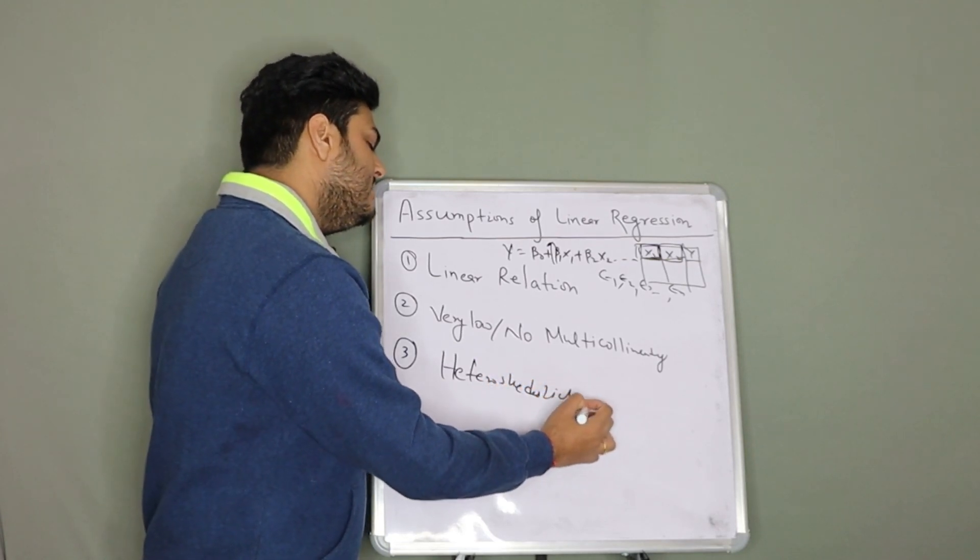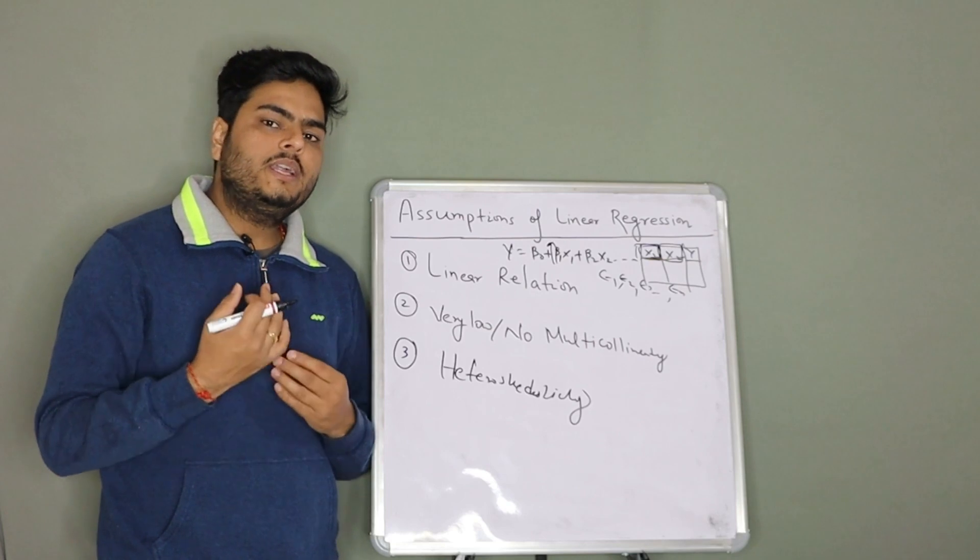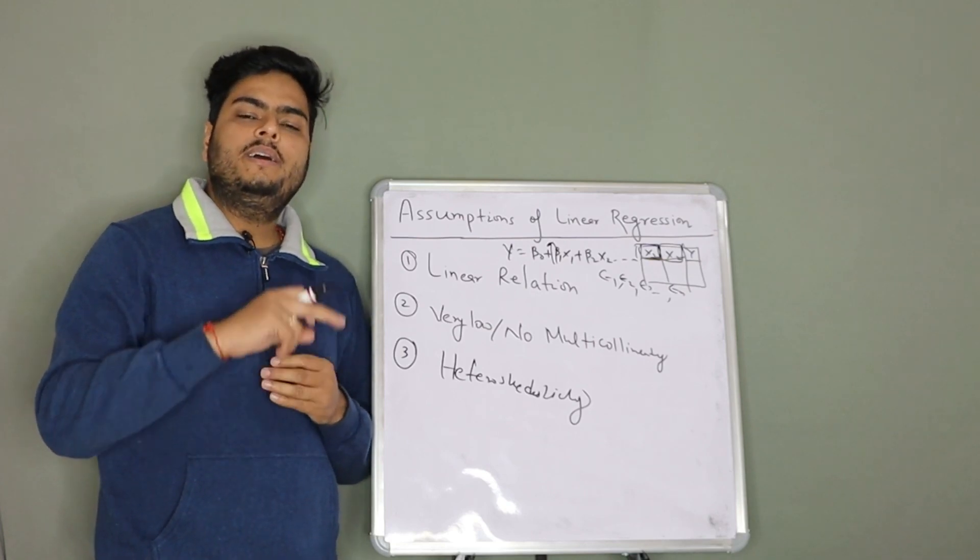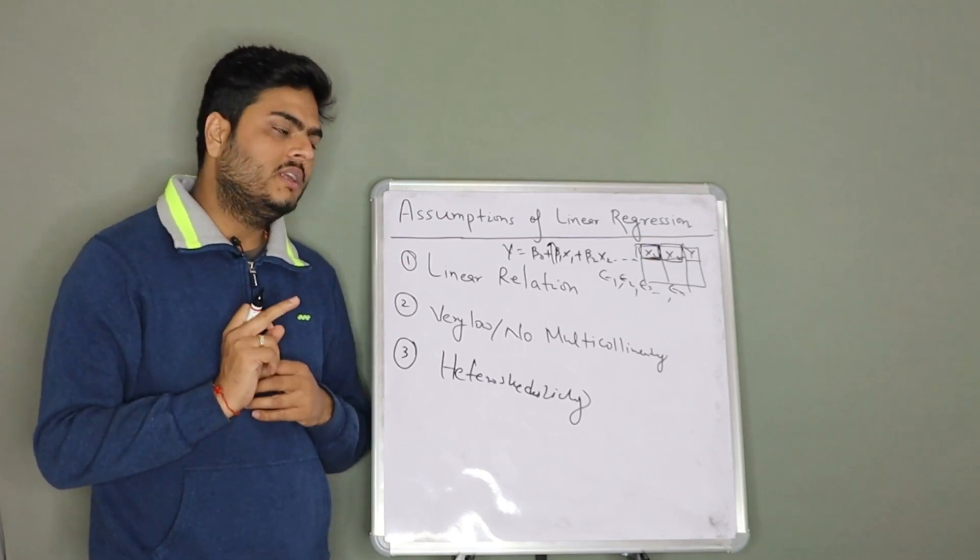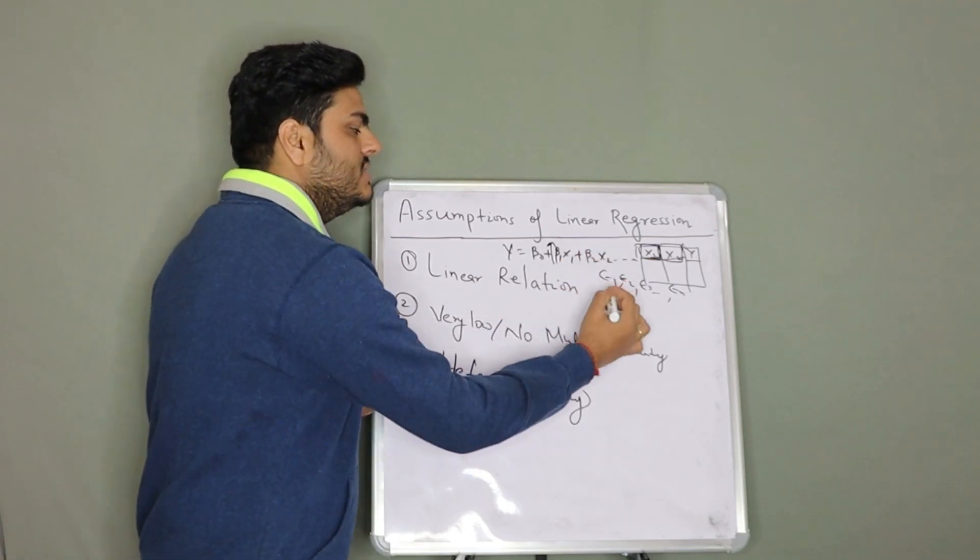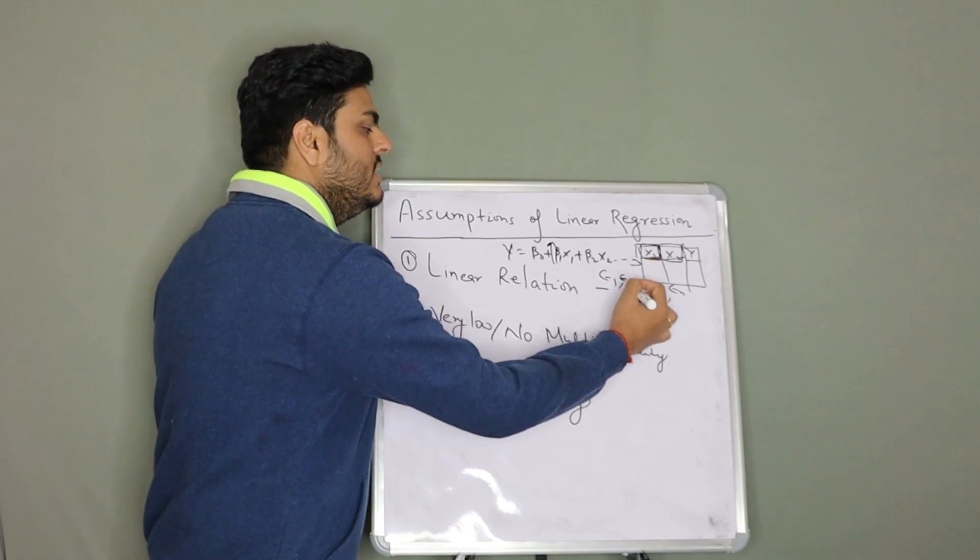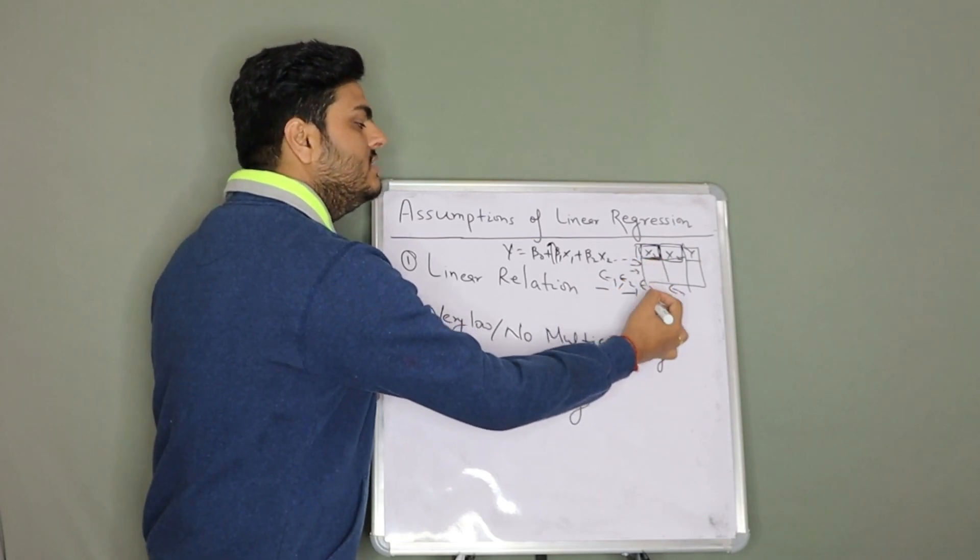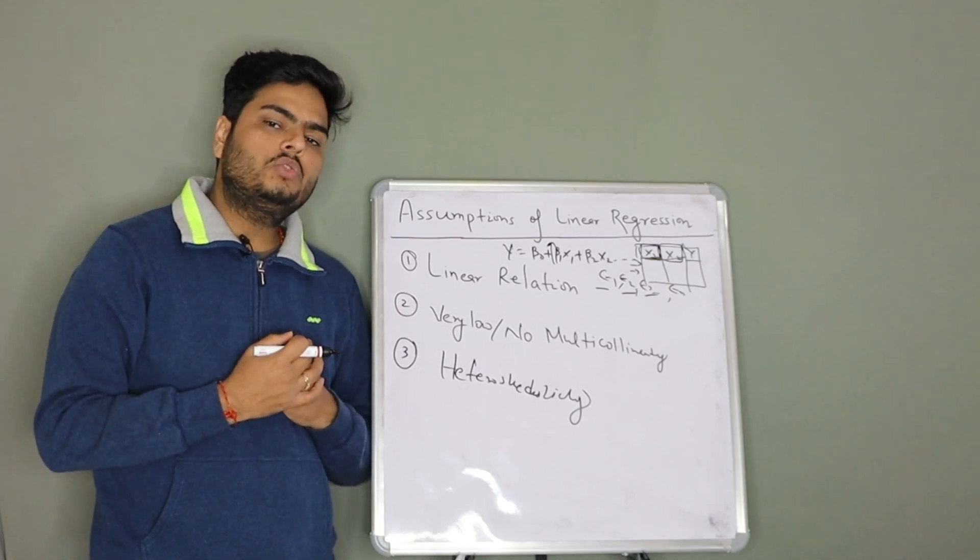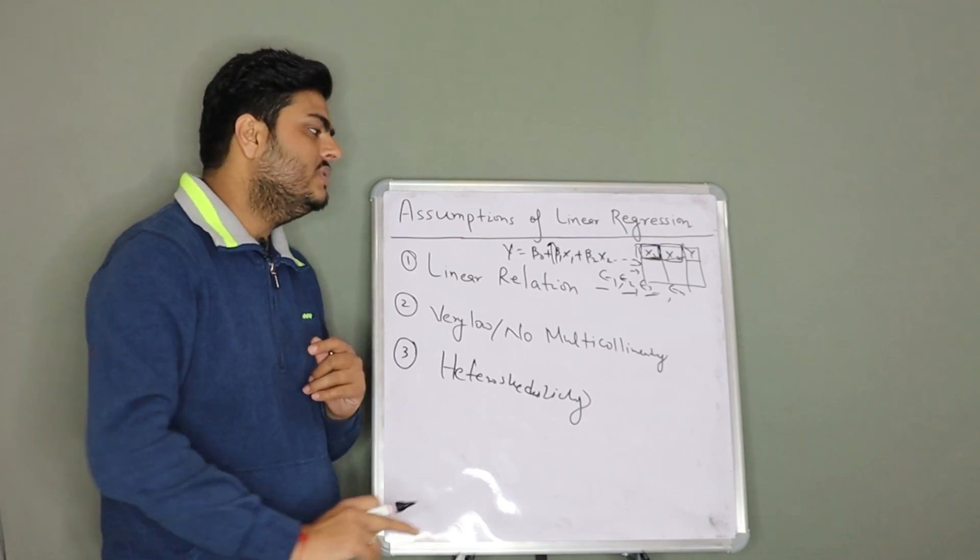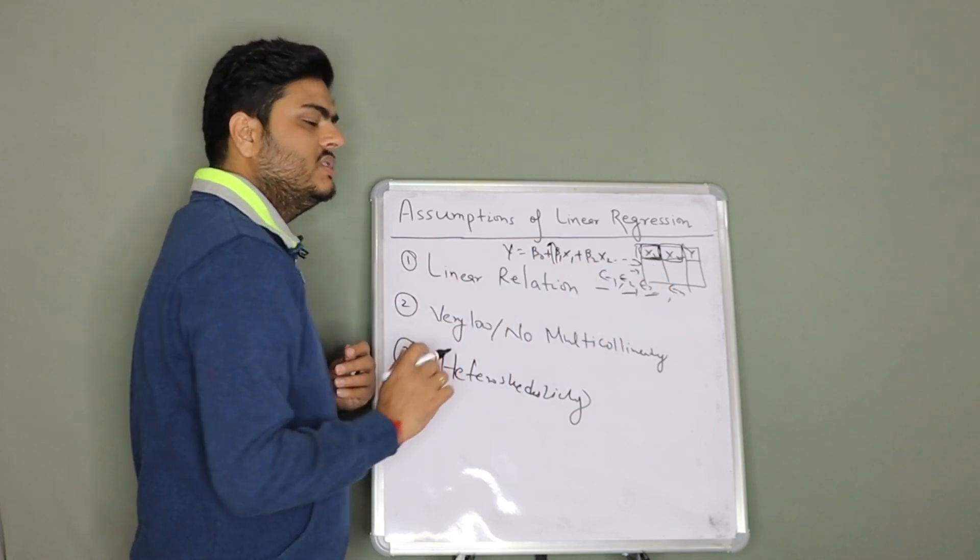What is this phenomenon, heteroscedasticity? This phenomenon is that your errors should show a random behavior for all your axis. What I mean to say here is your error terms, e1 is for one observation, e2 is for another observation, e3 is for third observation. So your errors should not show any kind of relation with x1, x2, x3.